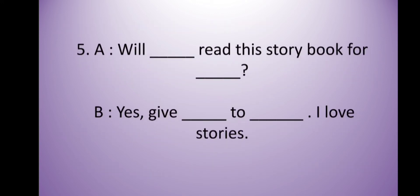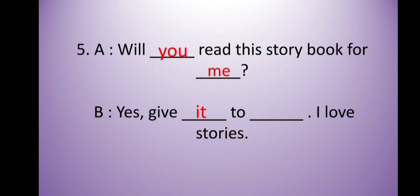The next one is: 'will dash read the storybook for dash?' I am asking a question to you. In the first blank I will use 'you' because I am talking to you. In the next blank the pronoun is 'me.' The sentence is: 'will you read this storybook for me?' You answer: 'yes, give dash to dash. I love stories.' We are talking about the book, so we use 'it.' In the next blank we are talking about you, so we use 'me.' The final answer is: 'yes, give it to me. I love stories.'